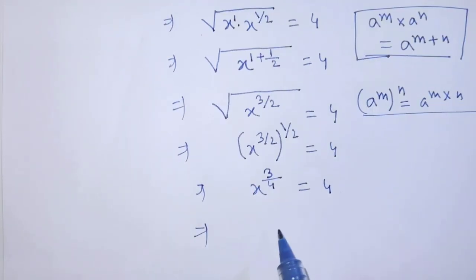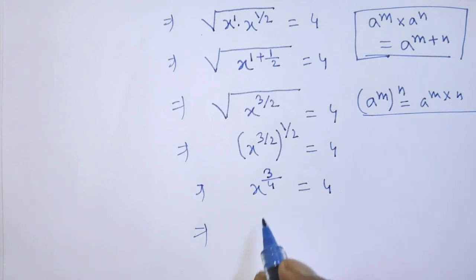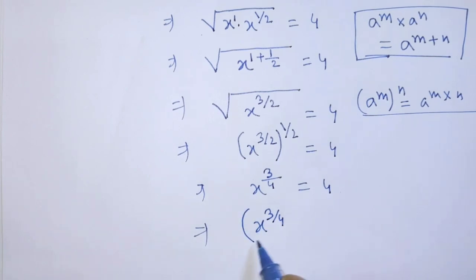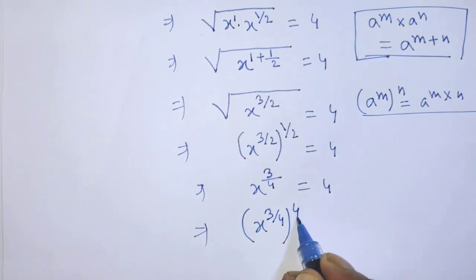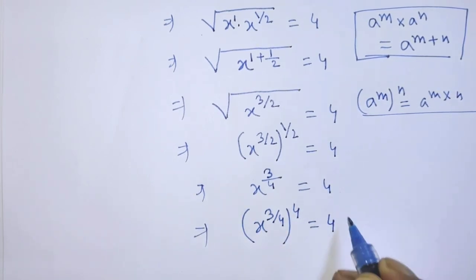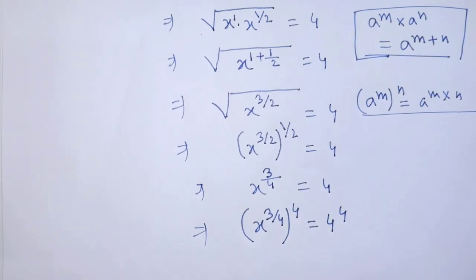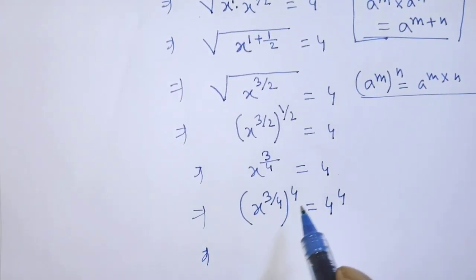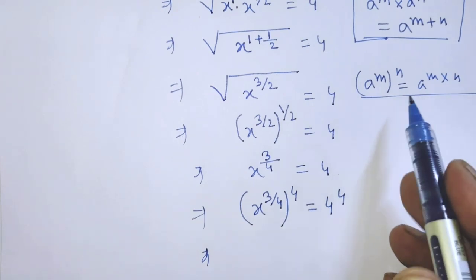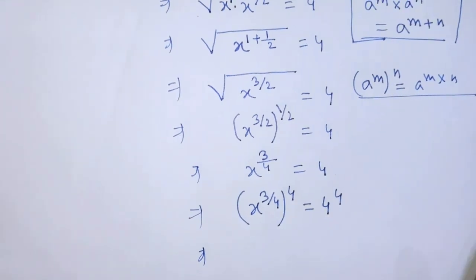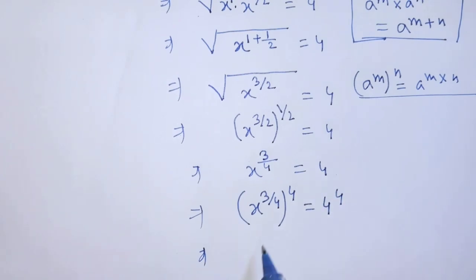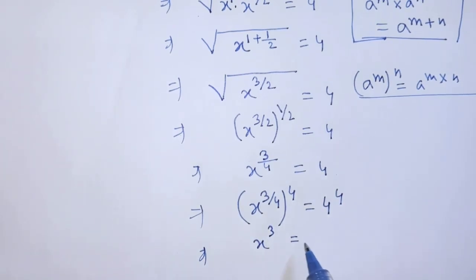Now we have to take power 4 on both sides of this equation. Applying the exponent formula again, it will be x to the power 3 is equal to 4 to the power 4, that is 256.